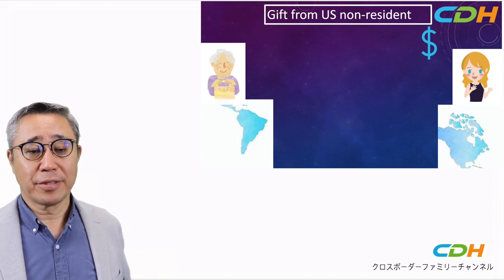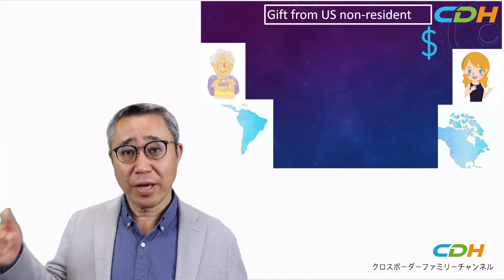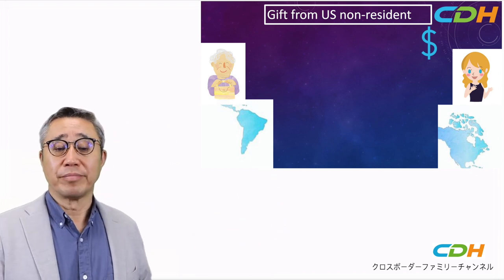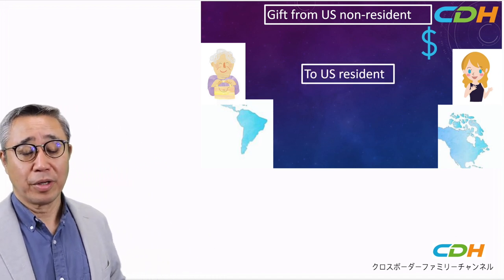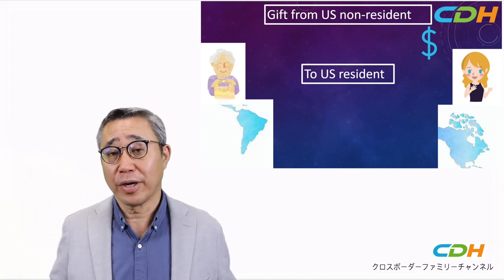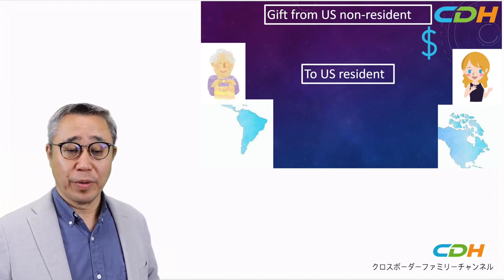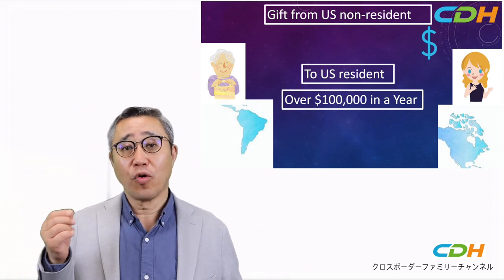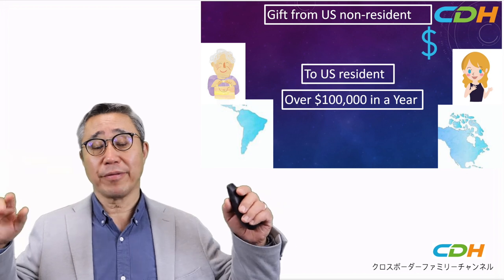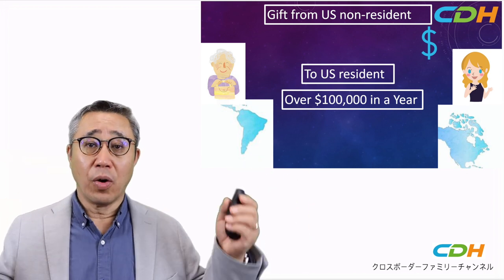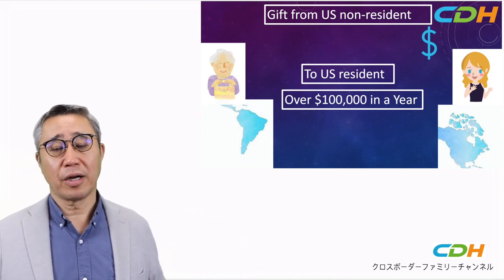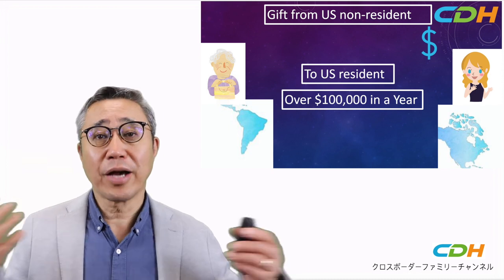Number one: this is a gift from a US non-resident — a person who is not living in the US, like this mother. There is a threshold: over $100,000 in a year. It could be one gift, or it could be five or ten gifts. You need to combine all the amounts for the year. If the total exceeds $100,000, then action is warranted.